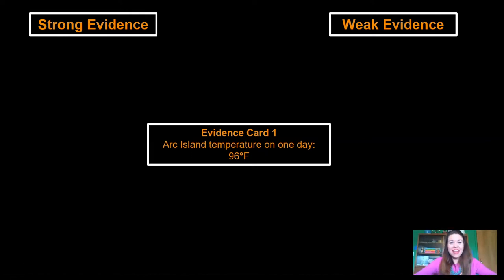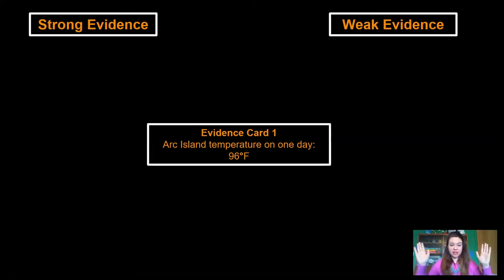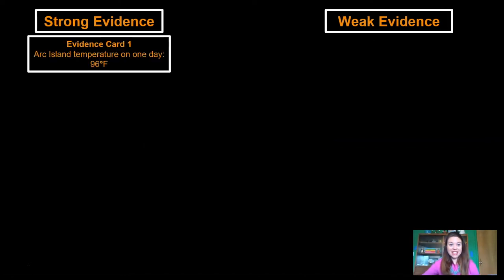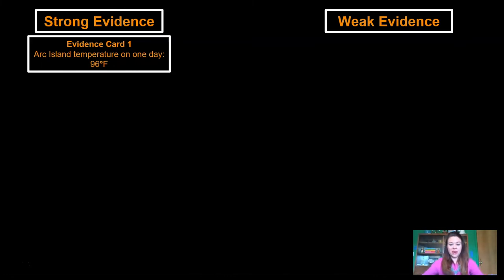I've labeled the screen with two sides: strong evidence and weak evidence. We're going to read each evidence card together and you decide whether it goes on the strong side or the weak side. Strong evidence has measurements we can compare to make a strong argument. Weak evidence is not easy to compare to other evidence. Evidence card one: Arc Island temperature on one day was recorded as 96 degrees Fahrenheit. That is strong evidence — it has an actual reading from a thermometer that we can compare to the other islands.